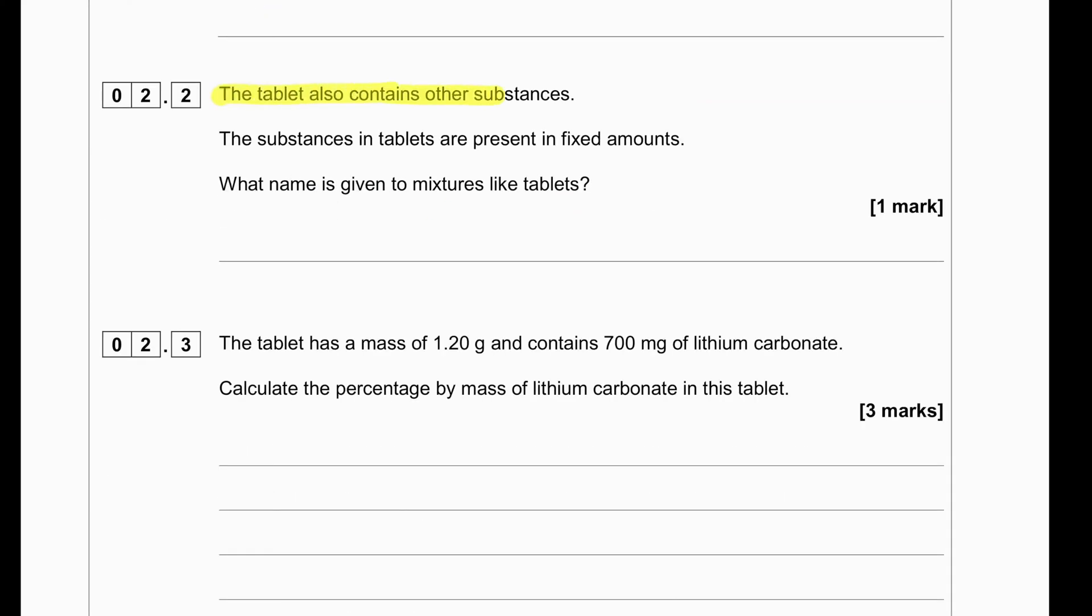The tablet contains other substances. The substances in tablets are present in fixed amounts. What name is given to mixtures like tablets? A tablet that is made of many types of mixture are often called formulation.